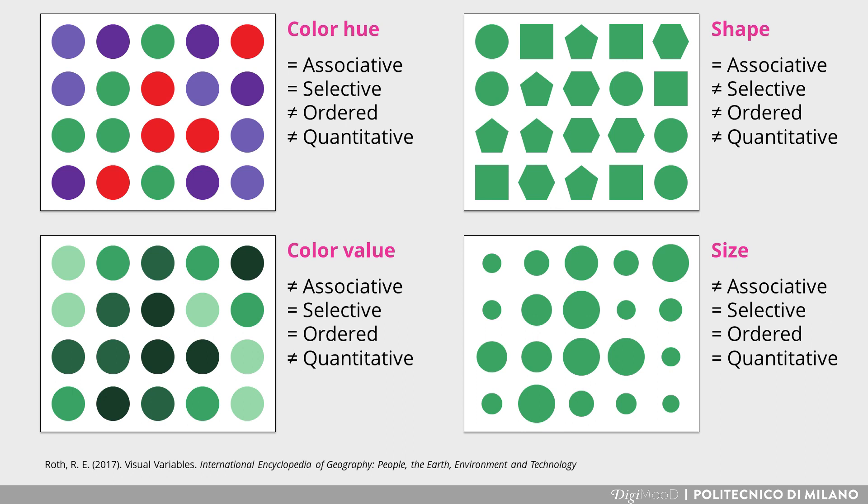The last example is using size. This variable is very powerful in communicating quantities, since we can quickly identify smaller and bigger items, but it's not suitable for groups or order.